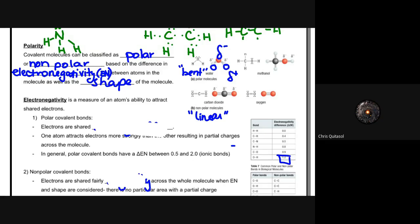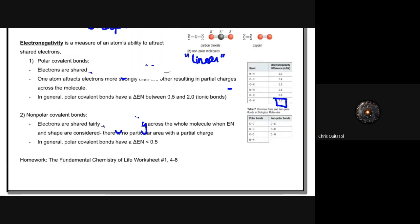So electronegativity is the last thing that I want to spend time talking about. Ultimately what we are talking about is that it's the measure of an atom's ability to attract shared electrons. So whatever I mean in terms of electronegativity with regards to polar covalent bonds, the electrons are shared quite unequally as a result of the difference in electronegativity charges.